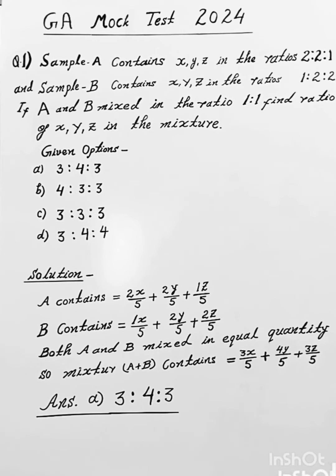For sample A, X, Y, Z are in the ratio 2:2:1. And sample B, X, Y, Z are in the ratio 1:2:2.